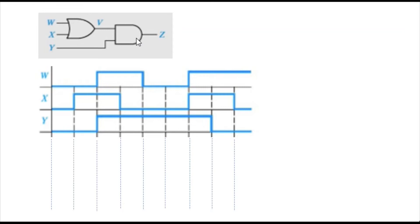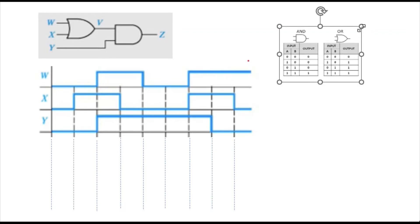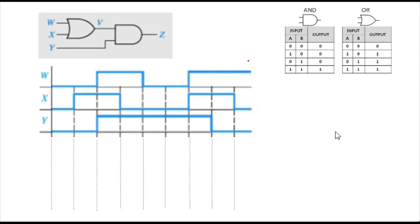The simplest way to solve this kind of question is to draw the truth table. This is the truth table for the OR gate and the AND gate. For the OR gate, whenever both inputs are 0 and 0, you get 0, and for the remaining combinations — 1 0, 0 1, 1 1 — you get 1.